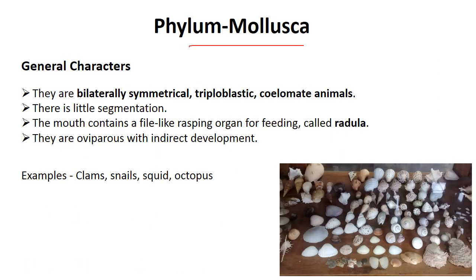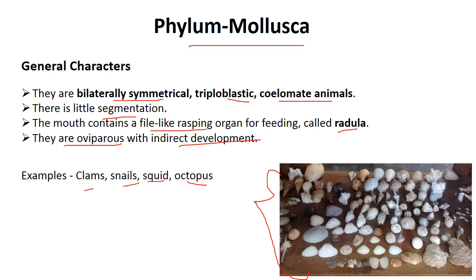Next phylum is Mollusca — snails and many types of mollusca. Mollusca is the second largest group of kingdom Animalia after Arthropoda. They are bilaterally symmetrical, triploblastic, and coelomate organisms with little segmentation. They have a unique character: the radula — a file-like rasping organ used for feeding. They are oviparous with indirect development through a larval stage. Examples: snail, squid, and octopus.